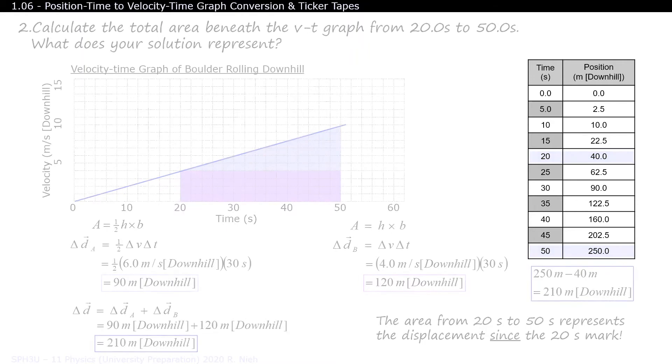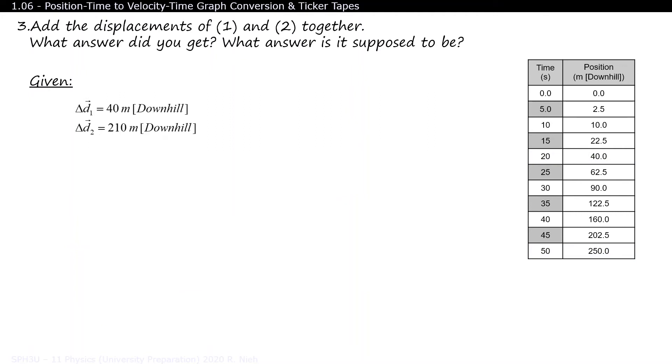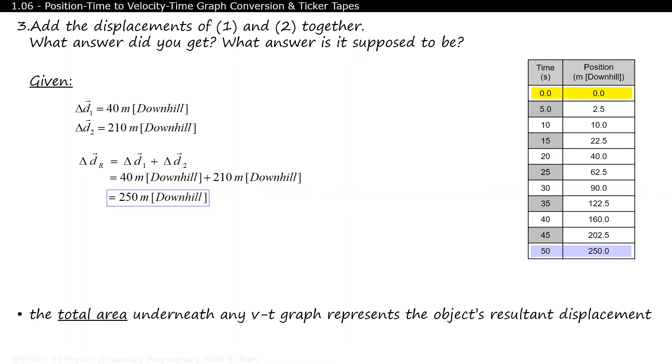What would happen if you added the displacements from part 1 and part 2? Well, 40 meters plus 210 meters would equal 250 meters. Since you started at position 0, that's why the position at 50 seconds is equal to the total displacement at 50 seconds.